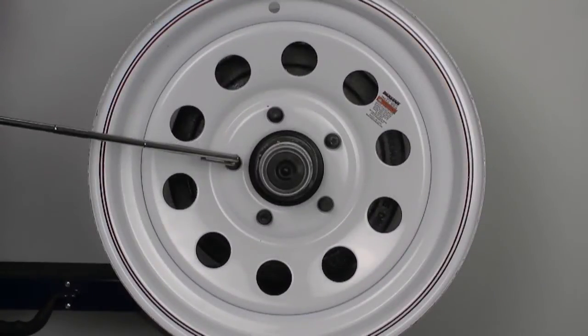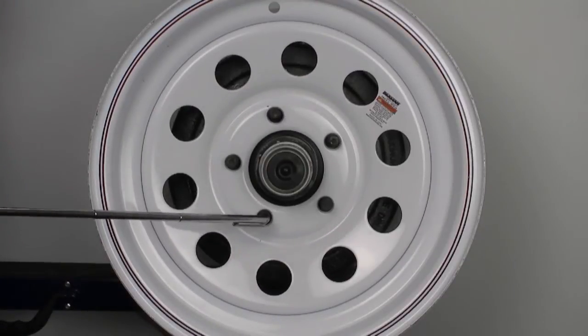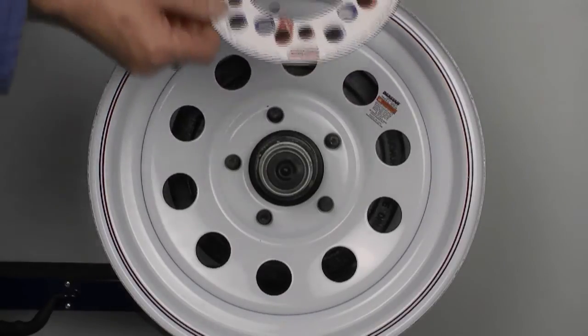Here we are measuring the bolt pattern from a 5 bolt spring axle. If you have an axle with a 5 bolt wheel, you will need to check the wheel bolt pattern or bolt circle. You can download the bolt circle template from our website.